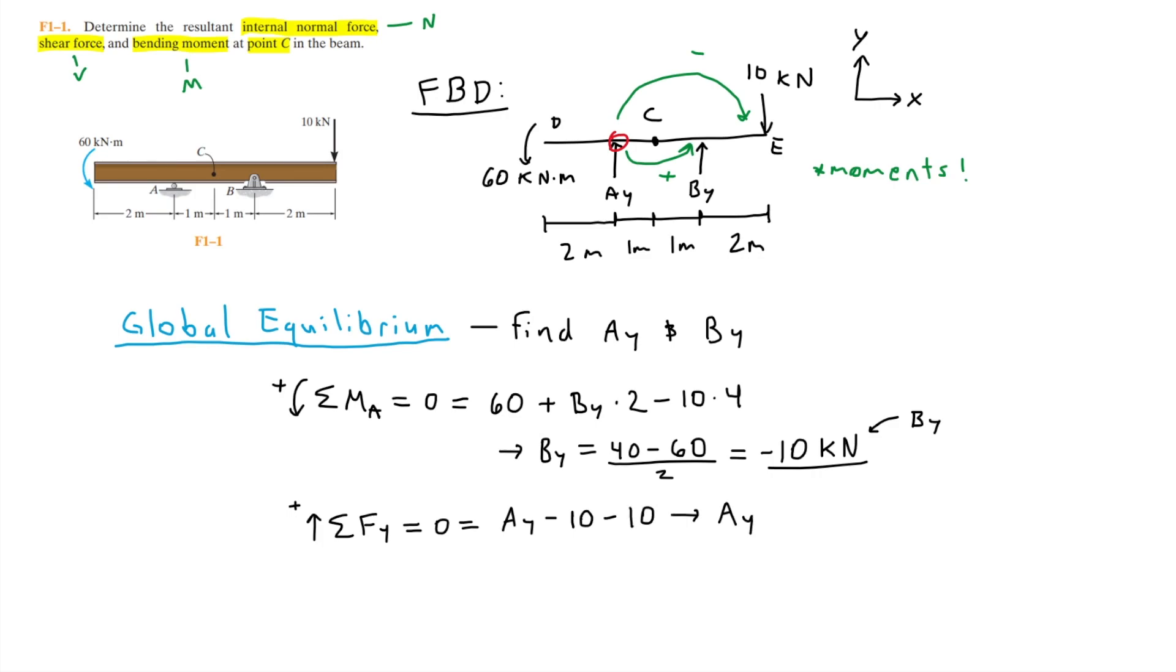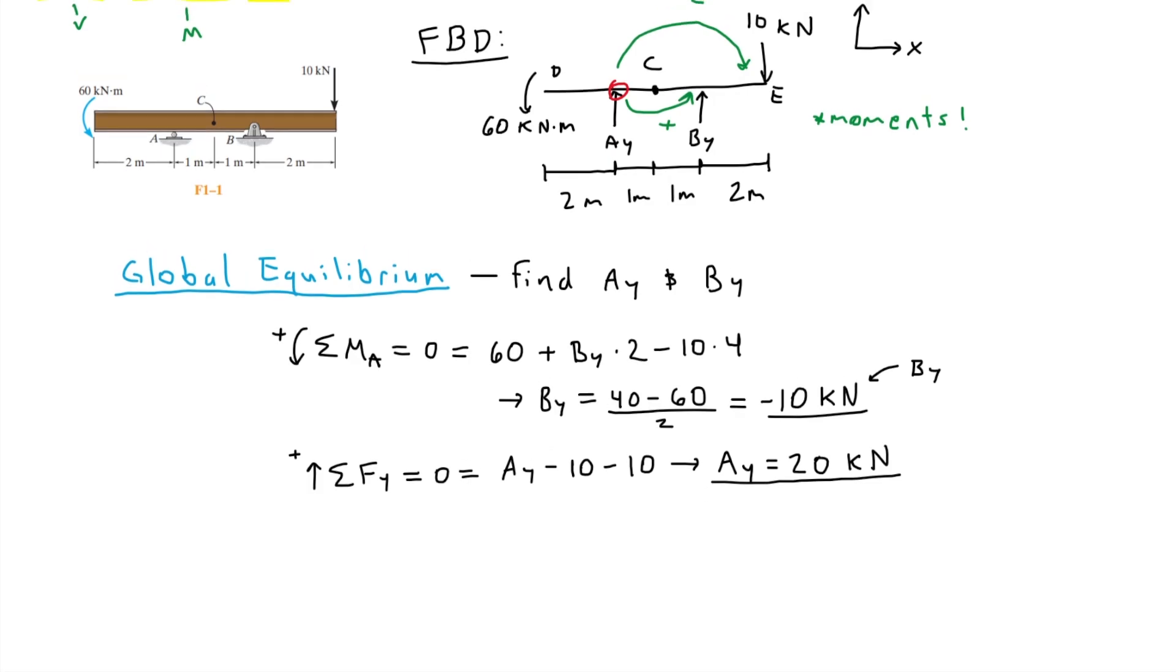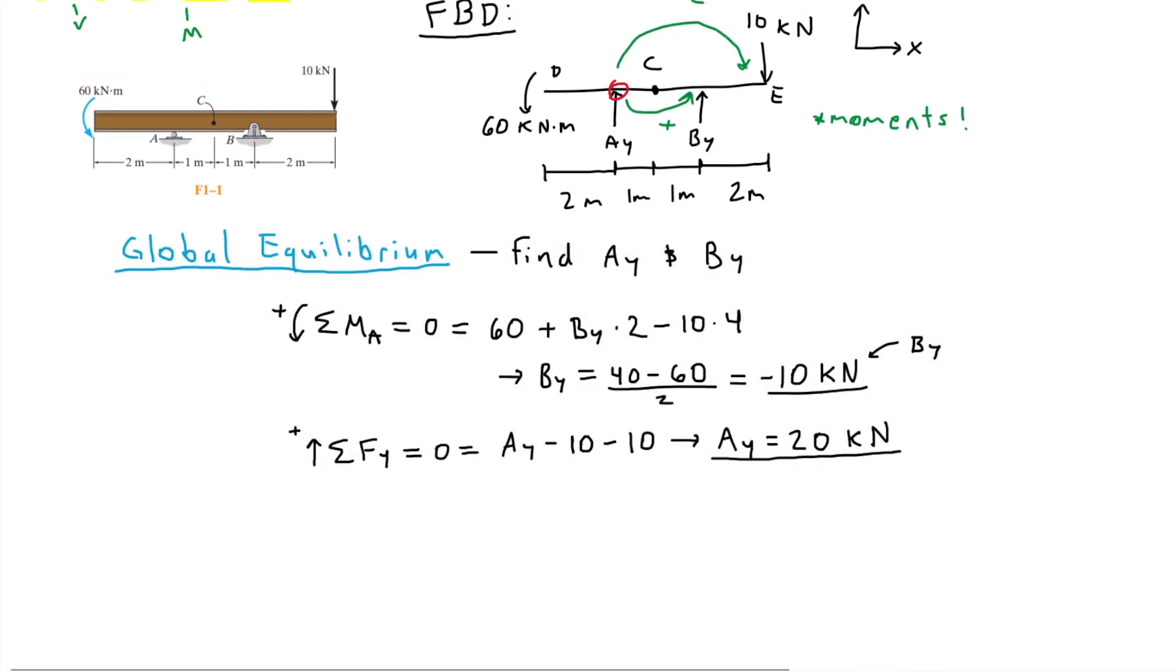Solving for AY, we get AY equals 20 kilonewtons. So now we have found all the unknown forces acting on the beam, which means we are now able to finally start solving for the internal forces.